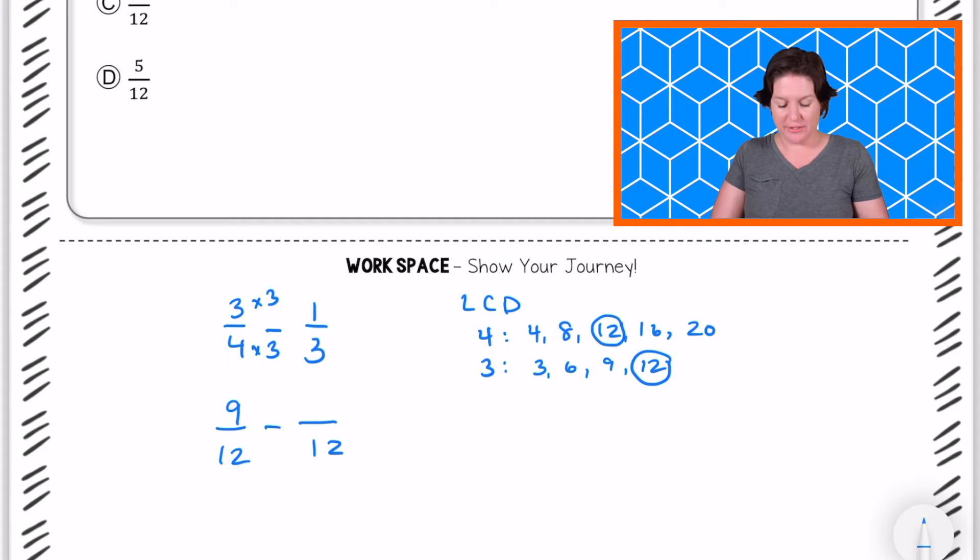Then we're going from the denominator of three to the denominator of twelve. So three times four equals twelve. Same on the bottom, same on the top. One times four is four. That was a long journey, but now we're here. We have matching denominators. All is good.